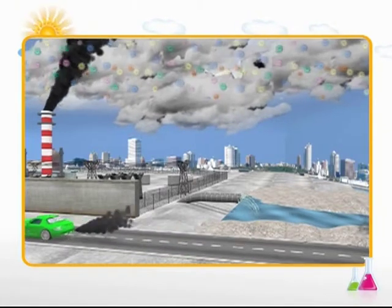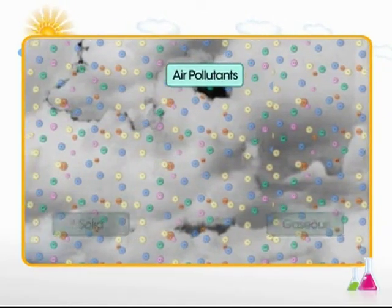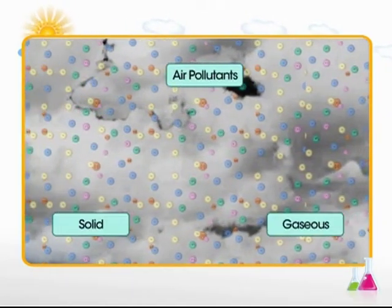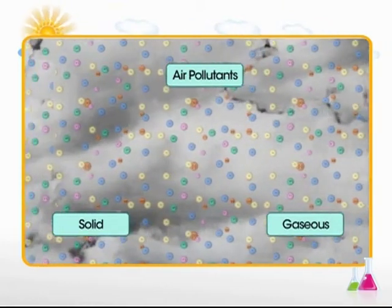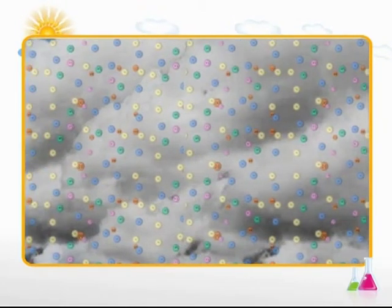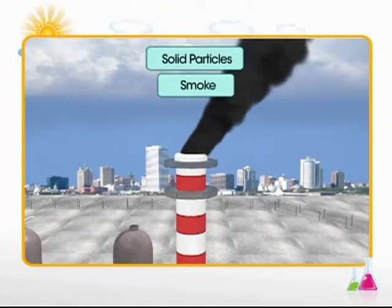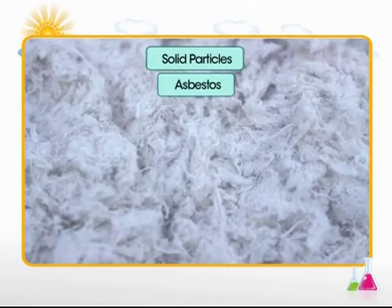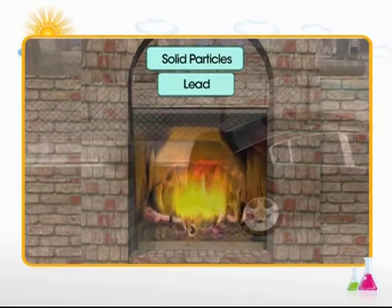The toxic substances which pollute or contaminate the air are called pollutants. Air pollutants could be solid suspended particles or gaseous in nature. The solid pollutants include suspended particulate matter such as dust, smoke, asbestos, carbon, soap particles, and metallic particles like lead.